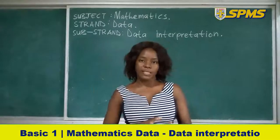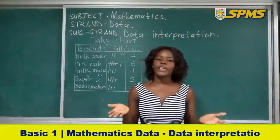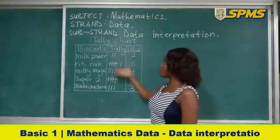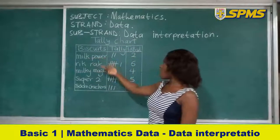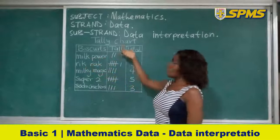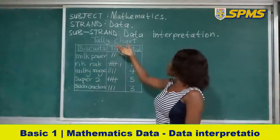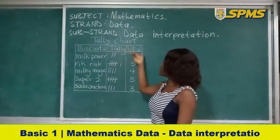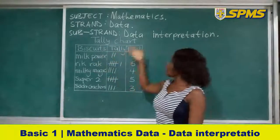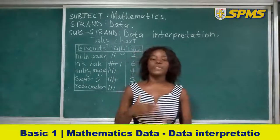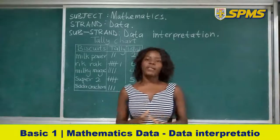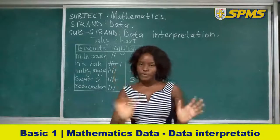Children, I hope you remember this tally chart. These are the names of the biscuits we have: Milk Power, Rit Rat, and these are the tallies. We have two representing Milk Power and the total. So today we are going to represent it in a pictorial graph.